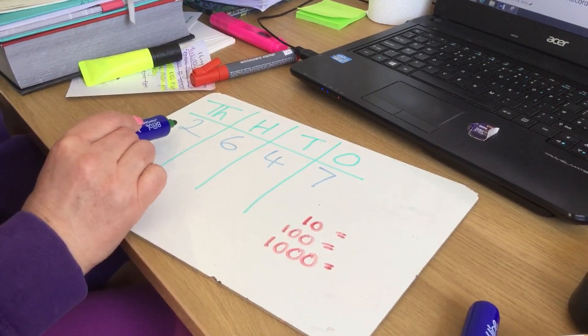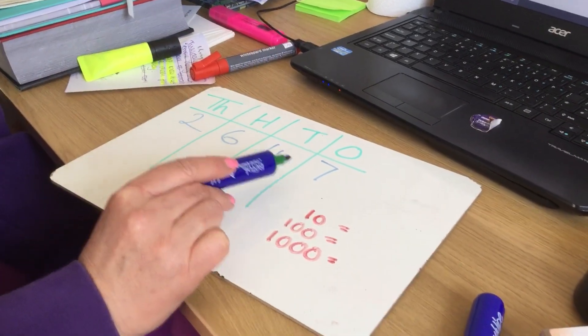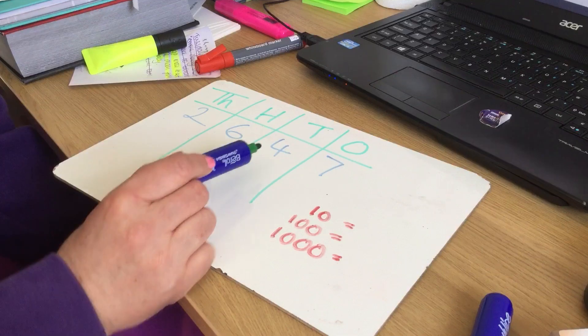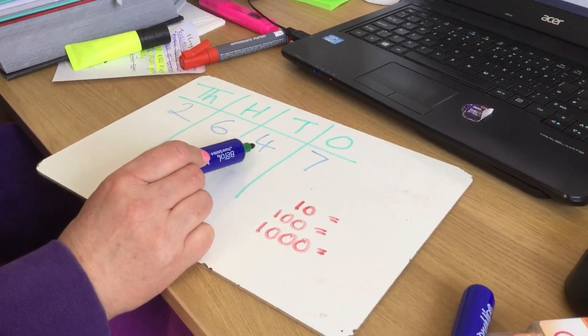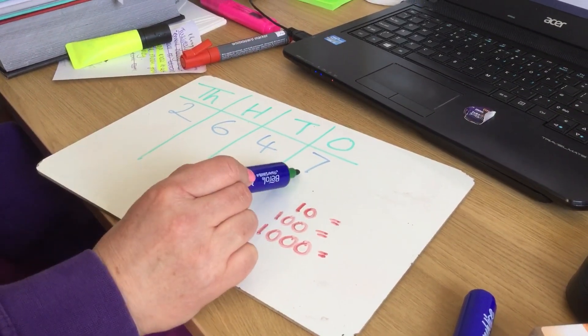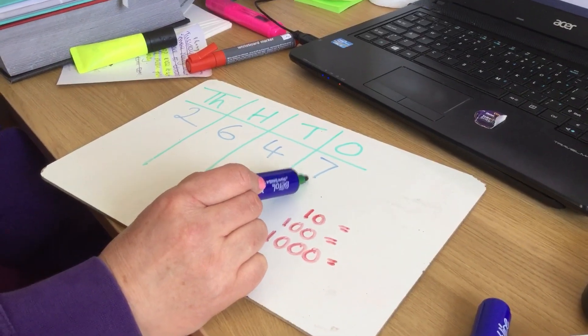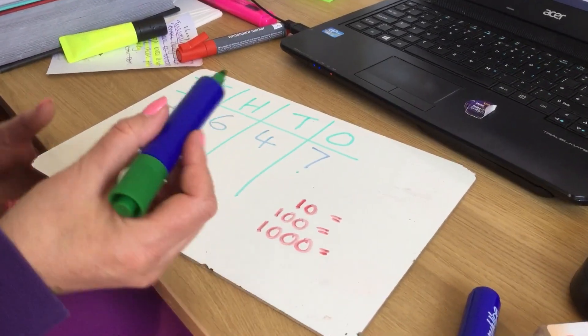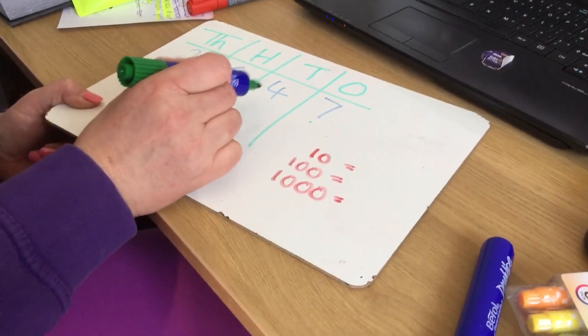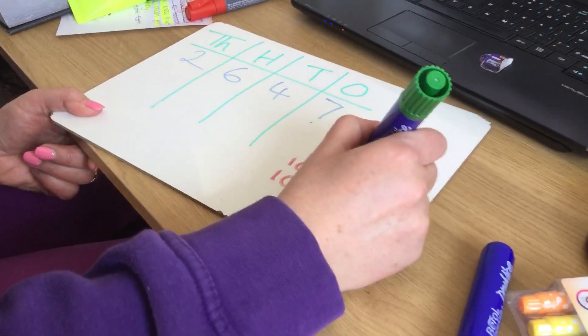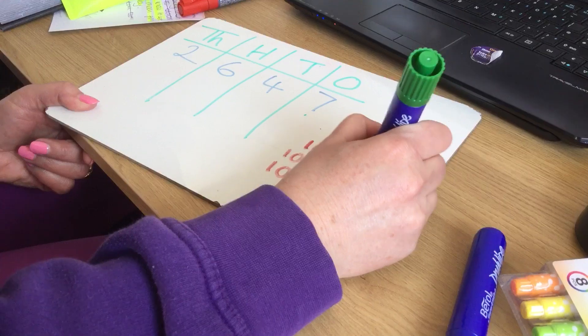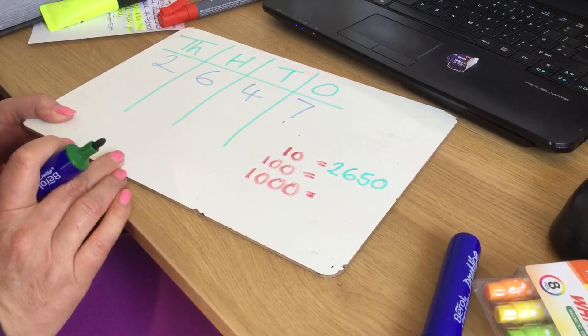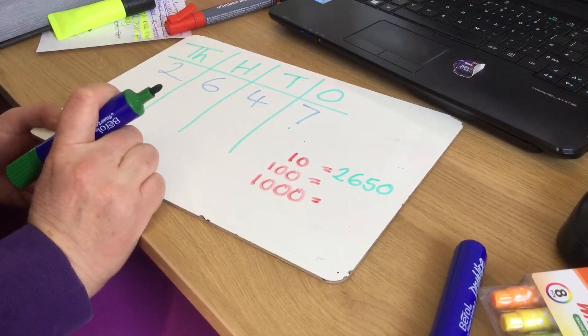So if I round the number 2,647 to the nearest 10, I don't look at my tens column, I look at my ones column. The number in my ones column is 7, therefore I'm rounding up. So 2,647 to the nearest 10 is going to be 2,650, because 50 is my next tens.